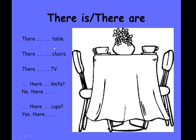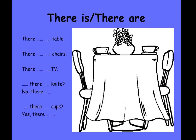Another picture exercise: there is a table, there are some chairs, there isn't a TV, is there a knife? Yes, there is a knife. No, there isn't. Are there any cups? Yes, there are.